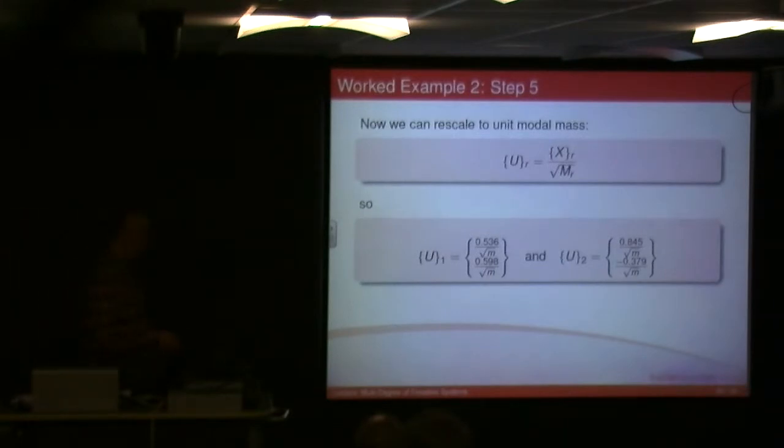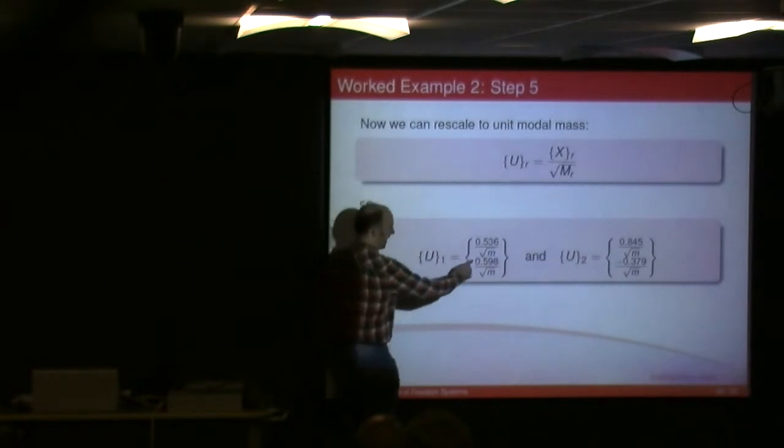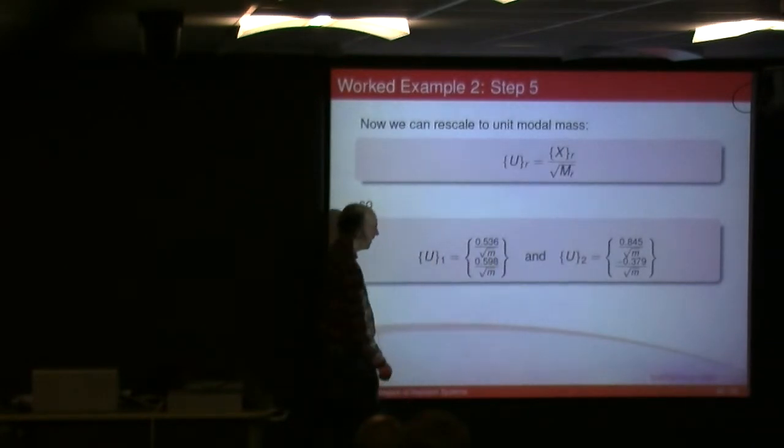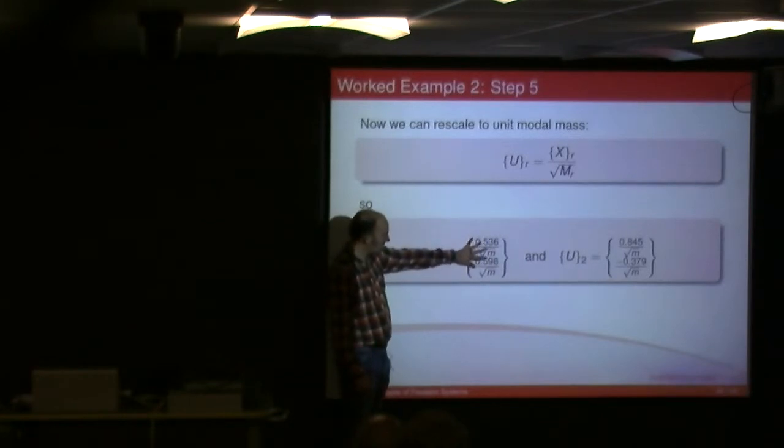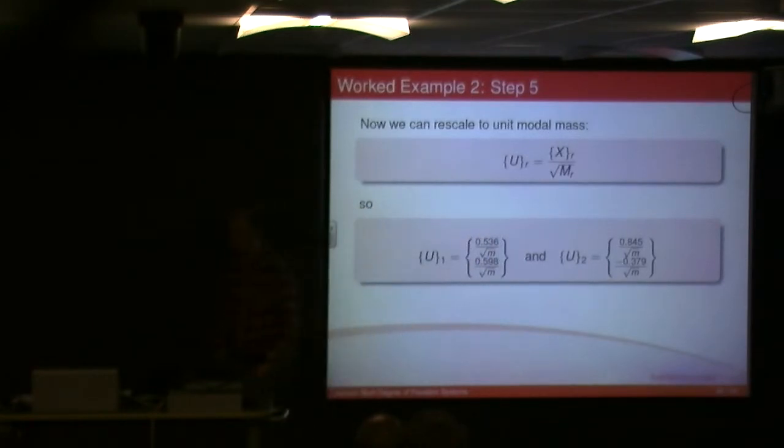And so obviously this could be 1 upon square root of m times by those two values, and 1 upon square root of m times by the other two values for u2.